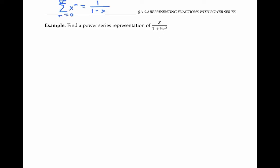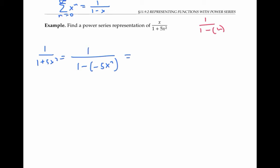As a second example, let's find a power series representation of x over one plus five x squared, again using the geometric series formula. One plus five x squared is the same as one minus negative five x squared. So for one over one plus five x squared, I can use the geometric sum formula to get the sum from n equals zero to infinity of negative five x squared to the n, plugging in negative five x squared for x.